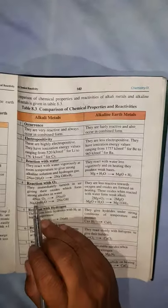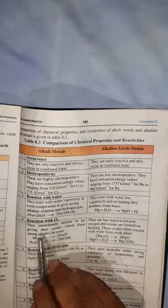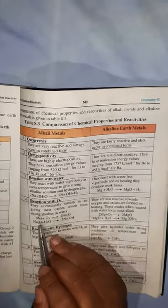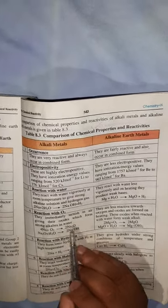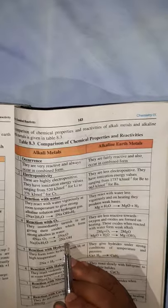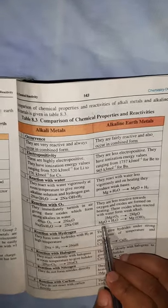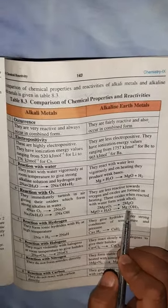Reaction with oxygen: group 1a elements immediately tarnish in air, forming oxides which produce strong alkalis in water — for example, sodium oxide reacts with water to form sodium hydroxide. Group 2a elements are less reactive towards oxygen; they form oxides on heating, and these oxides form weak alkalis with water — for example, magnesium oxide reacts with water to form magnesium hydroxide.